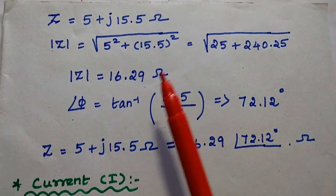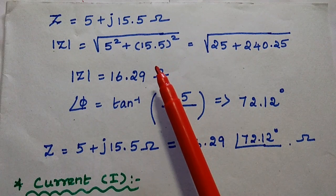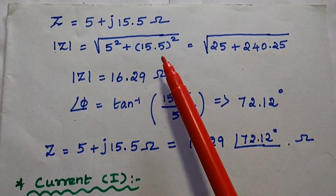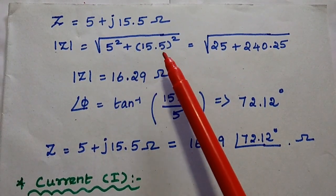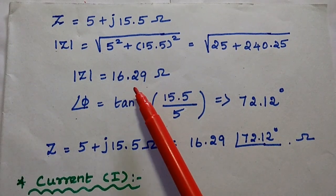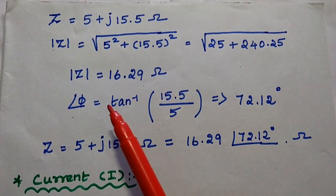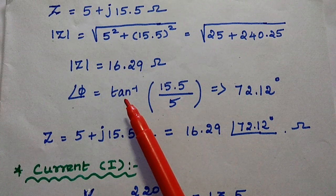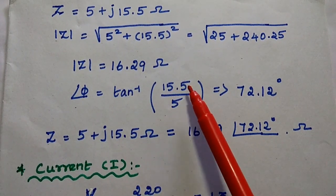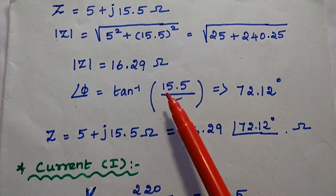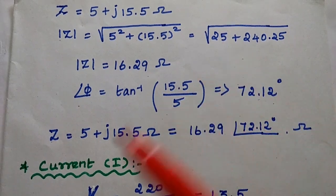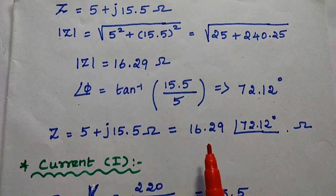Next we are going to find out the polar form for this impedance. For polar form, we need to find out the magnitude as well as the phase. The magnitude of the impedance is equal to the square root of the real term squared plus the imaginary term squared. So the square root of 5 squared plus 15.5 squared gives 16.29 ohm. The phase angle is obtained by tan inverse of the imaginary value divided by the real term — tan inverse of 15.5 divided by 5 gives 72.12 degrees. We can write the impedance in complex form as well as polar form.